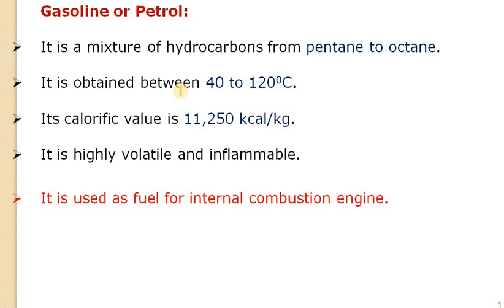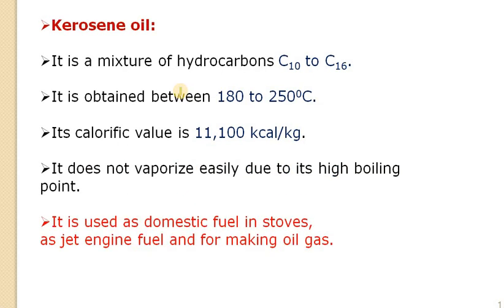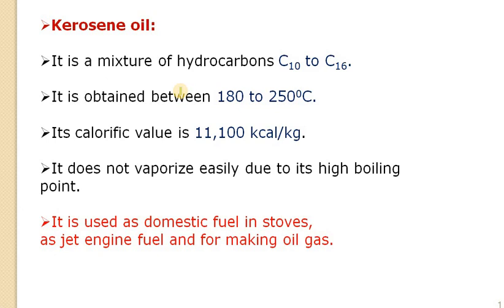Gasoline's calorific value is around 11,250 kilocalories per kg, giving it the highest energy value. It is highly volatile and inflammable, and most commonly used for internal combustion engines. Diesel oil, obtained as a fraction of C10 to C18 carbons at around 250 to 320 degrees centigrade, has a calorific value of around 11,000 kilocalories per kg and is mostly used as fuel for diesel engines. Kerosene oil consists of C10 to C16 carbons, obtained at 180 to 250 degrees centigrade, with a calorific value almost similar to that of diesel.